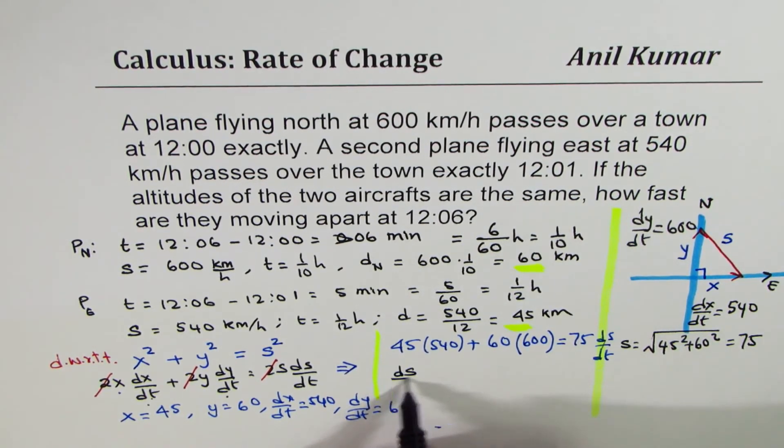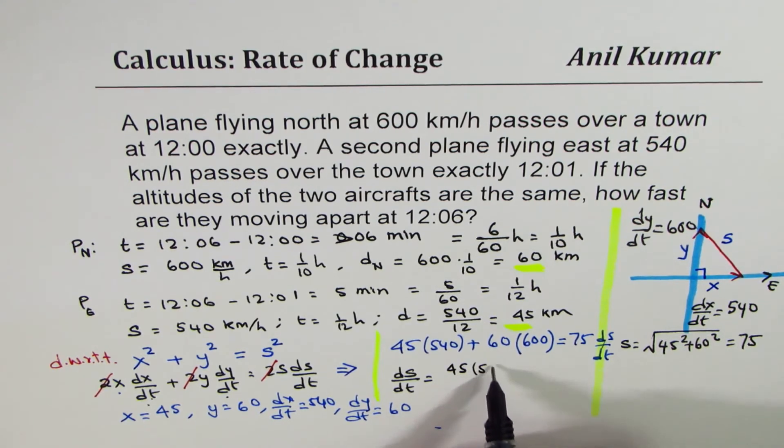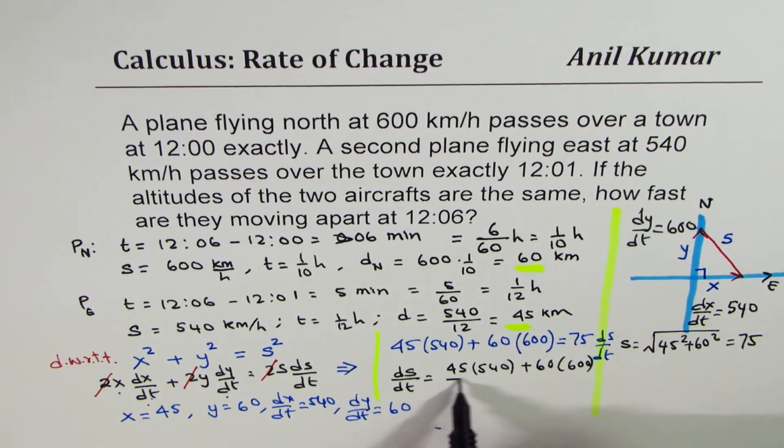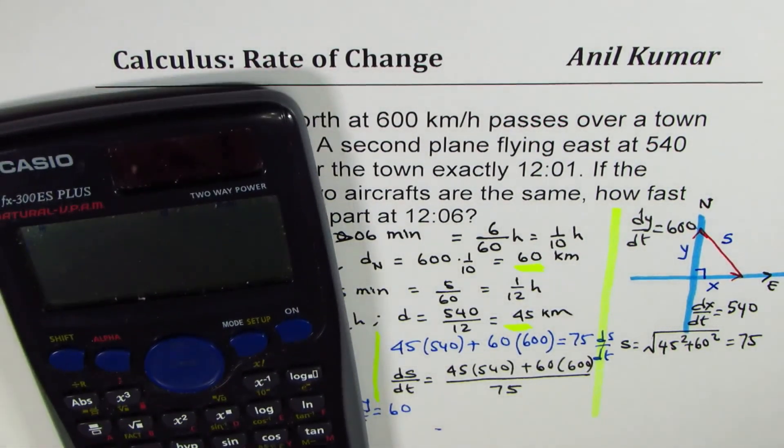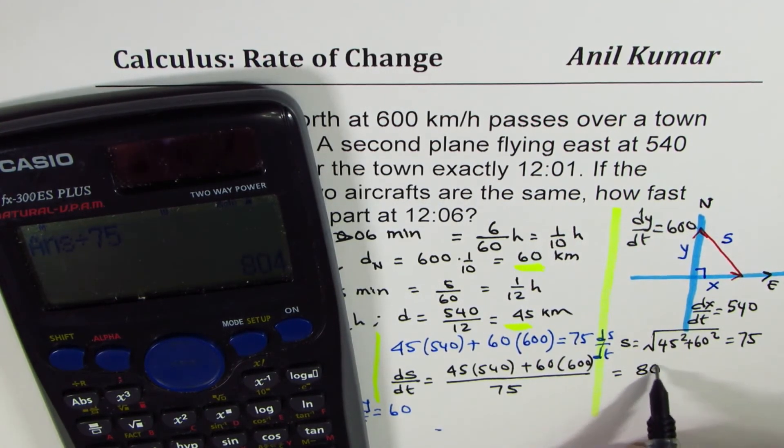So let's calculate dS/dt. We have dS/dt as equal to, multiply these divided by 75. Let me write down the expression: 45 times 540 plus 60 times 600 divided by 75. Now let's take a calculator. Find the answer. So we have 45 times 540 plus 60 times 600 equals to, divide by 75 equal to 804. So we get 804.